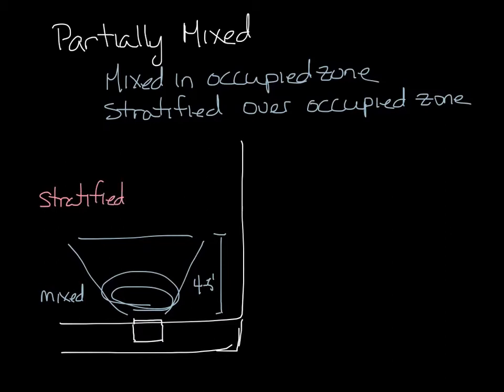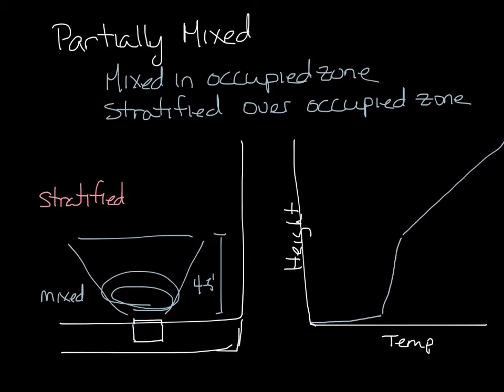Above that height, the air is stratified because the diffuser does not have any velocity in that area. A partially mixed system looks something like this. Right at the floor you'd have a temperature rise because that's where the diffuser is, then you'd have a mixed zone that's fairly flat, and then the stratified layer on top.